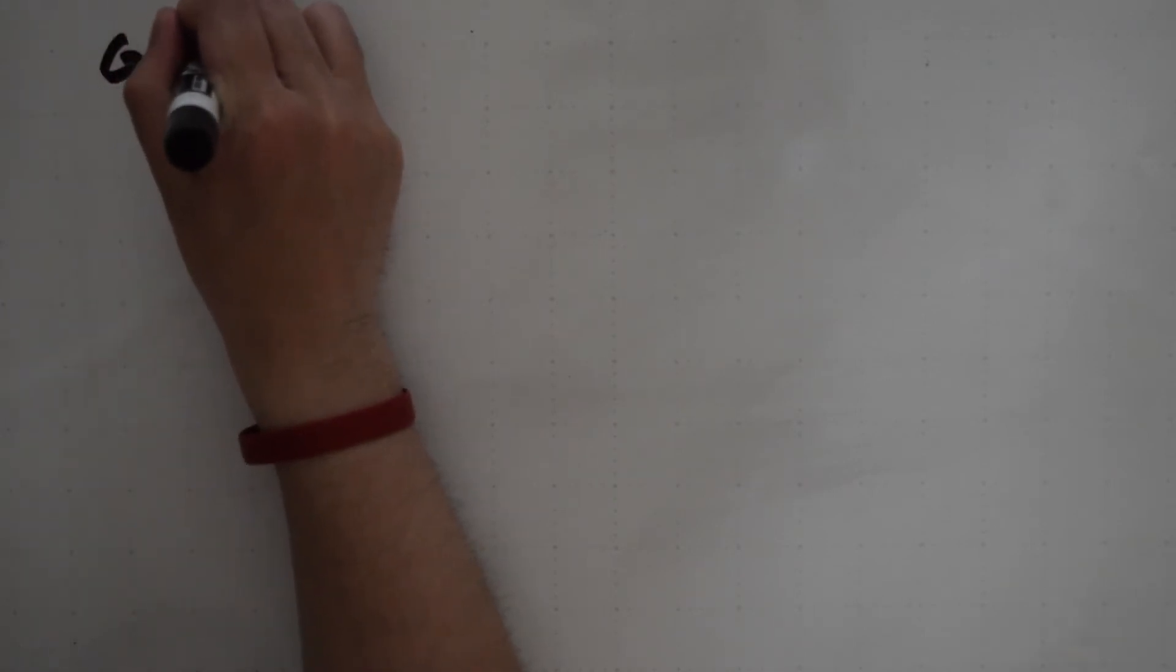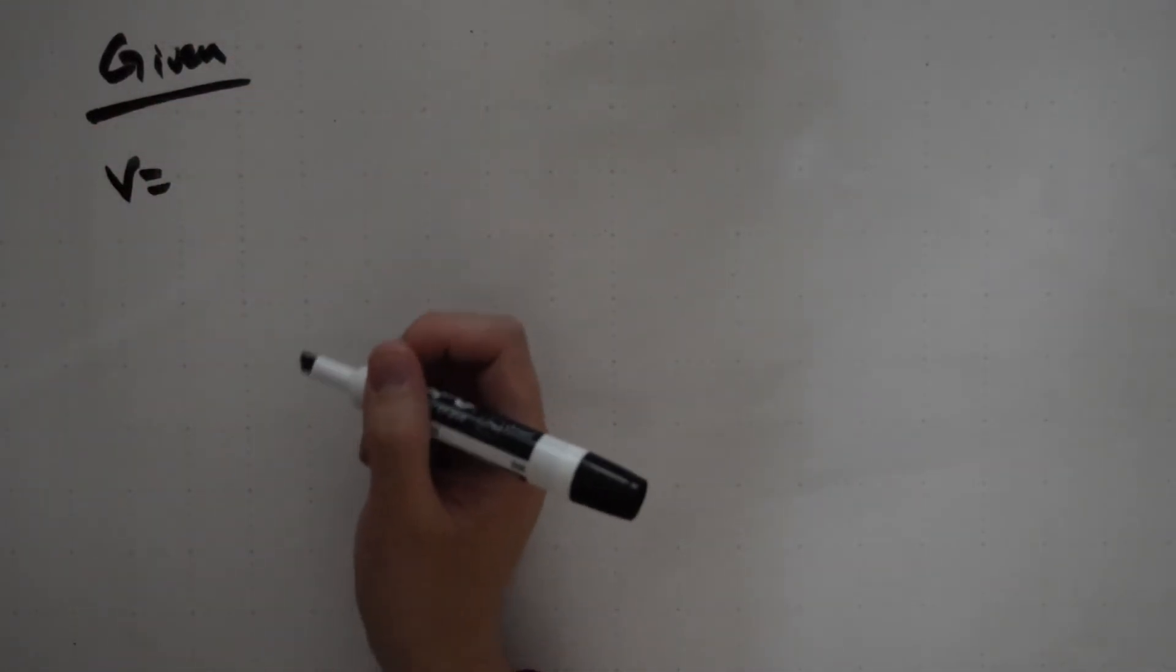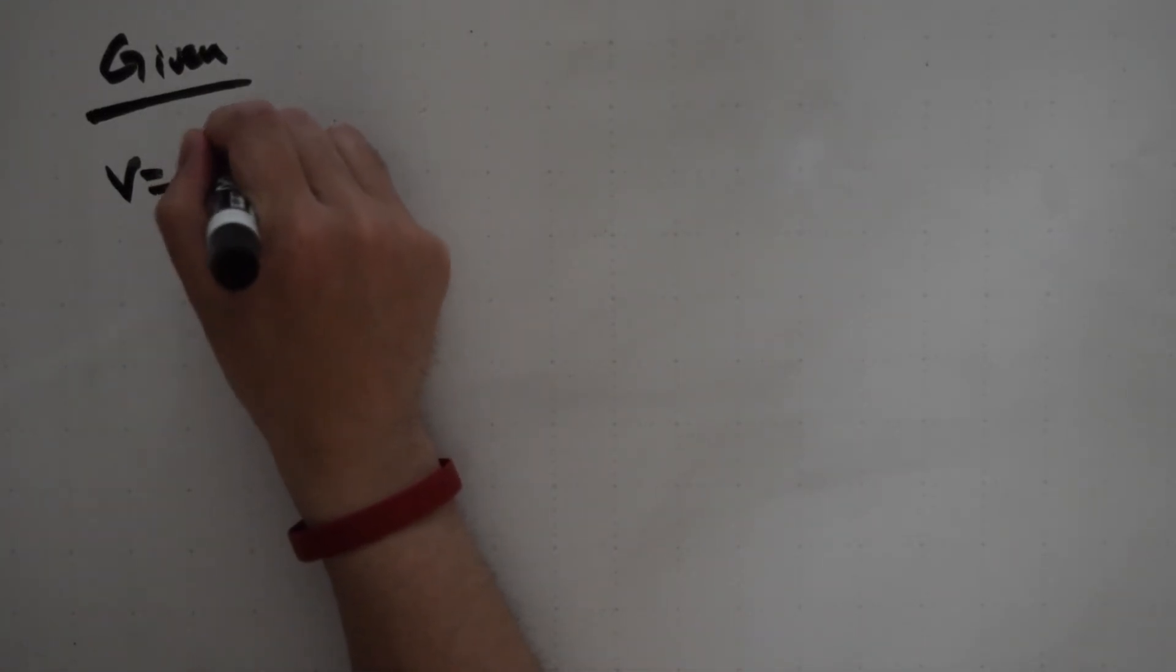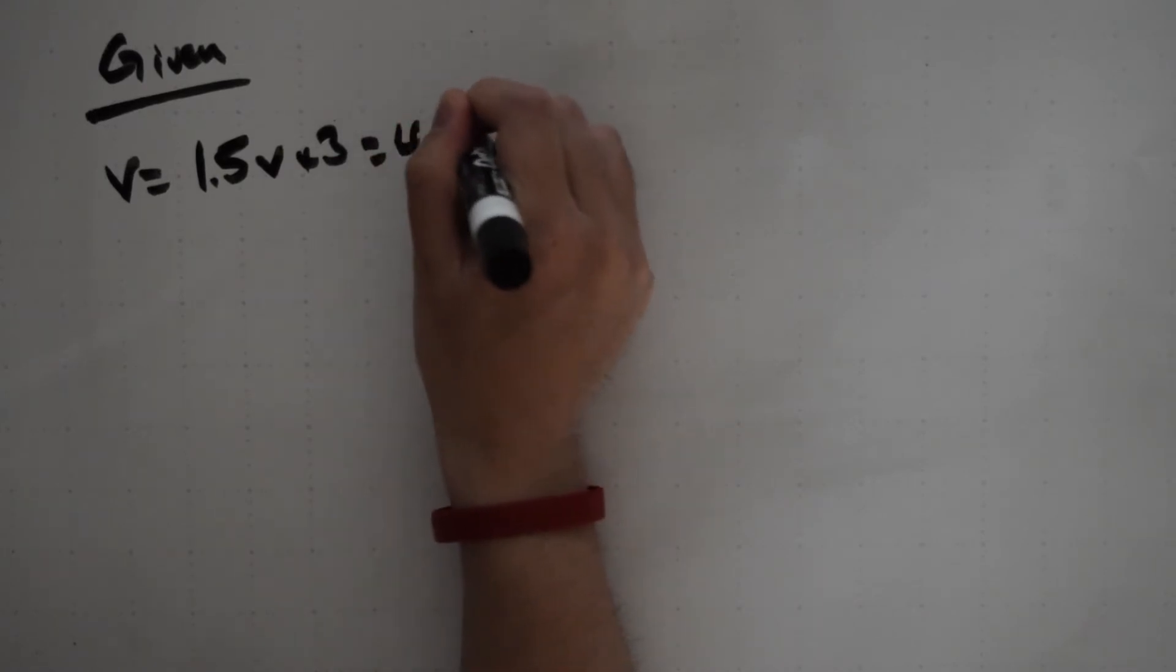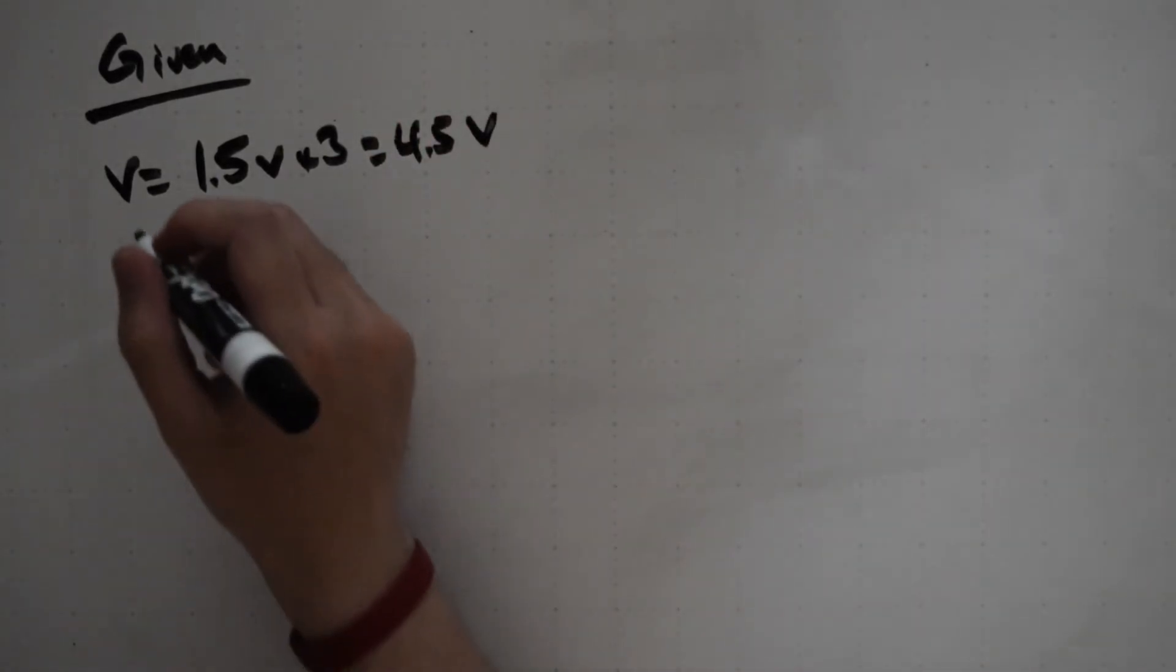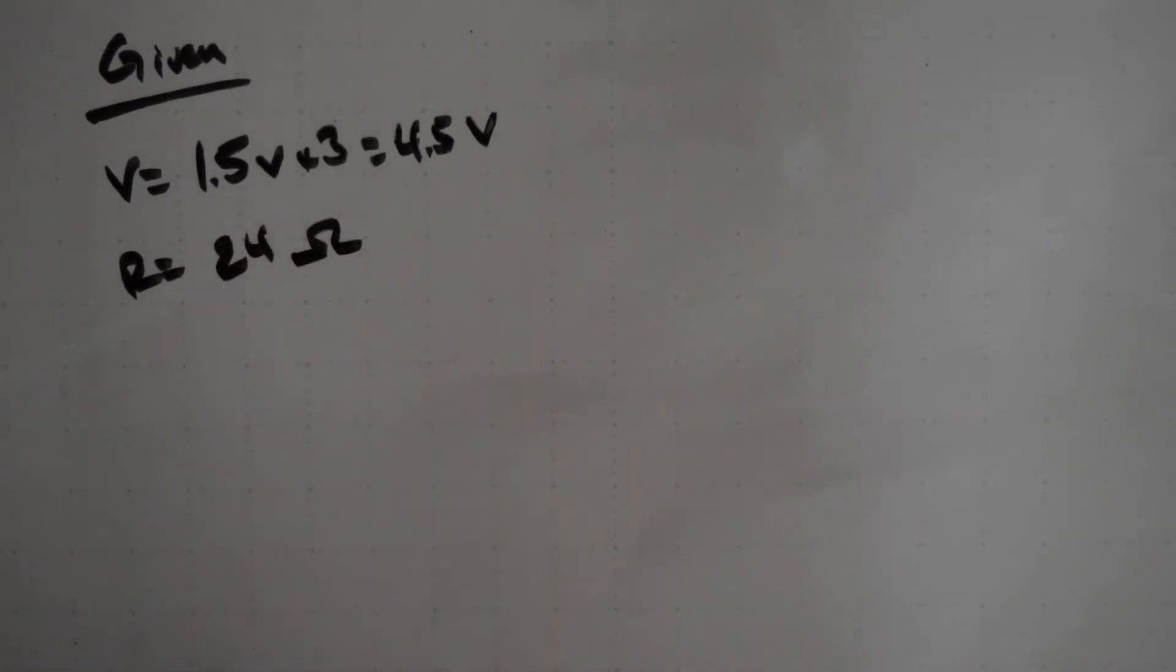If you remember, when you have batteries in series, we have to add the voltages together. So this is actually going to be 1.5 volts times three batteries has a total potential of 4.5 volts. The resistance is exactly as we read it off the question and we're solving for current.